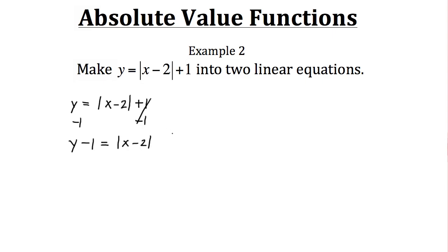If you remember, absolute value functions measure the distance a point is from an origin. That point can be on the positive or negative side of a number line, so we need to account for both cases. First, y minus 1 equals positive x minus 2, or for the negative case, y minus 1 equals negative (x minus 2).